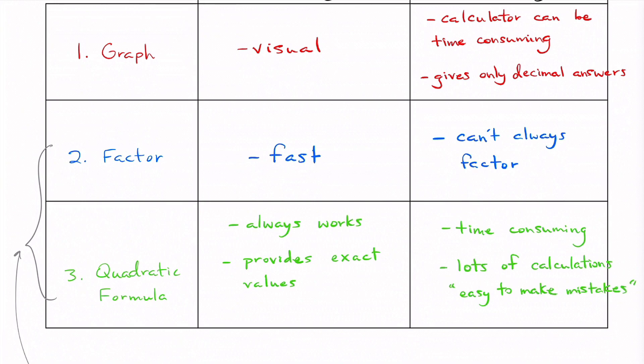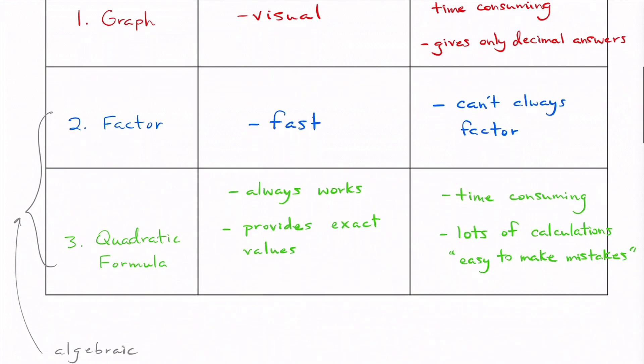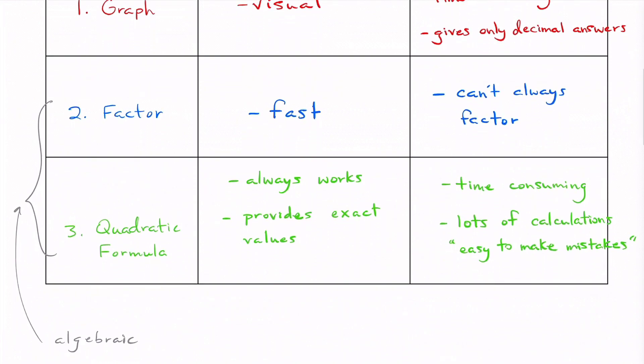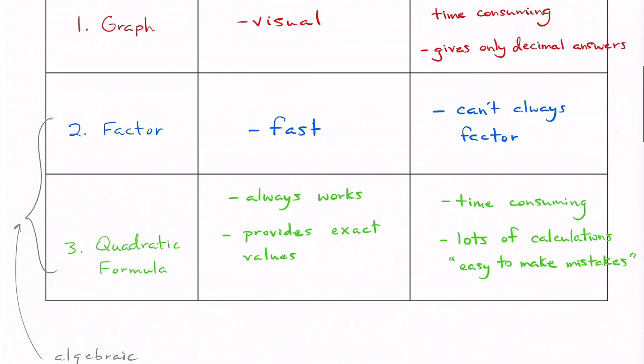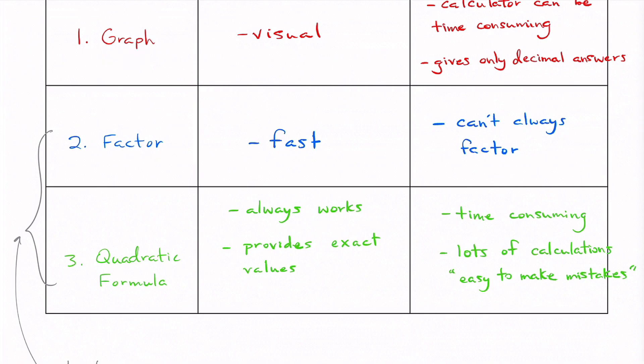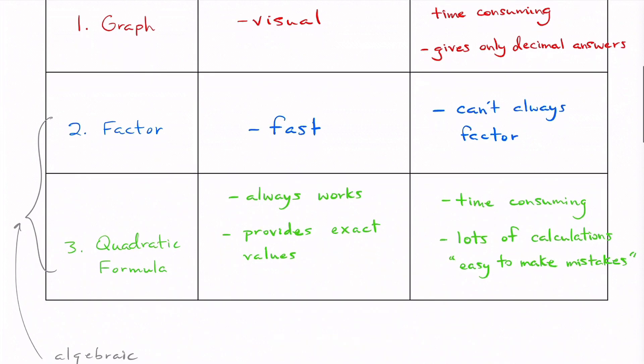Now we know the advantages and disadvantages of these three methods, so you're going to be able to pick the one that's best fit for each type of question. One last note: if you're ever told to solve something algebraically, you're going to have to use either factoring or the quadratic formula. Graphing is not doing it algebraically — algebraically means to do it by hand. Let's get into our examples.